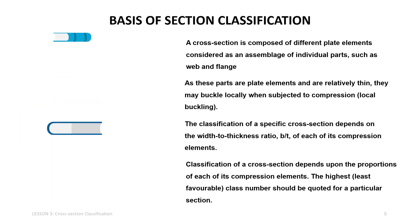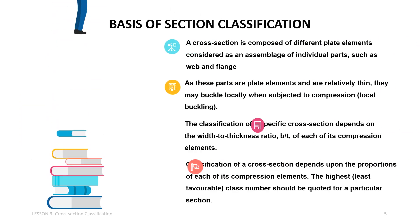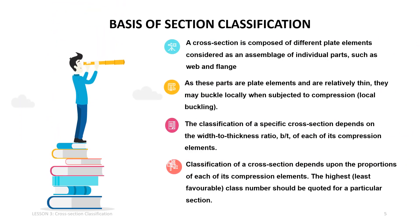A cross section is composed of different plate elements considered as an assemblage of individual parts, such as web and flange. As these parts are plate elements and are relatively thin, they may buckle locally when subjected to compression. The classification of a specific cross section depends on the width to thickness ratio.